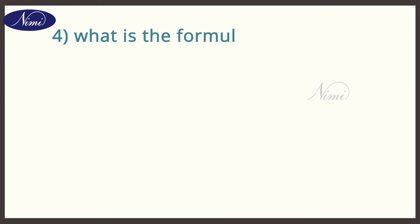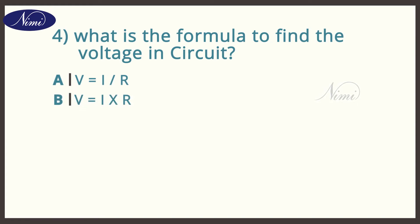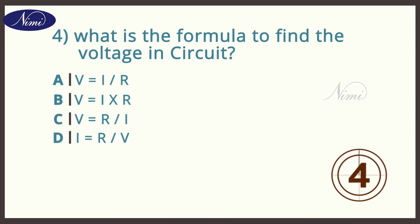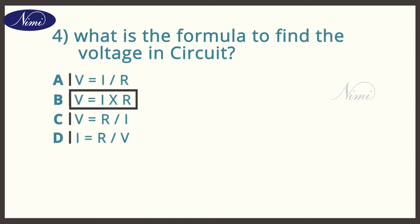Question number four: What is the formula to find the voltage in a circuit? Option A: V = I / R. B: V = I × R. C: V = R / I. D: I = R / V. And the answer is B — V = I × R.